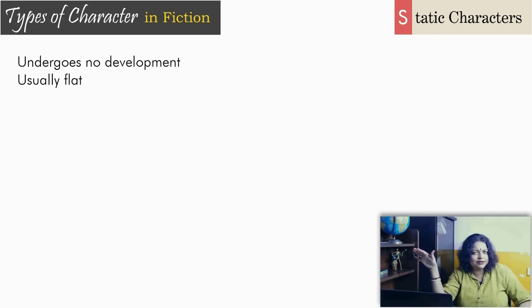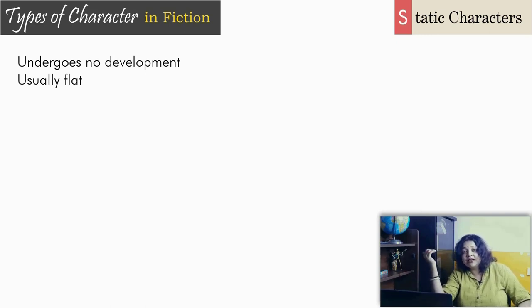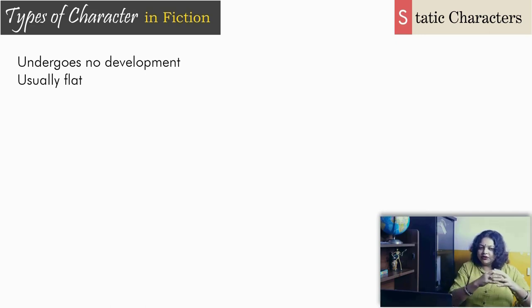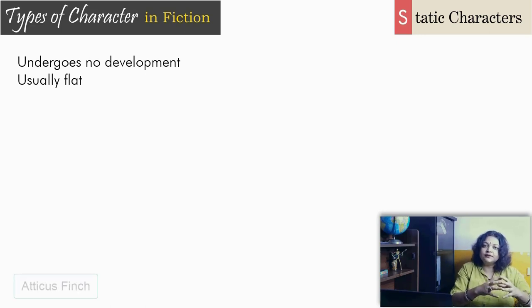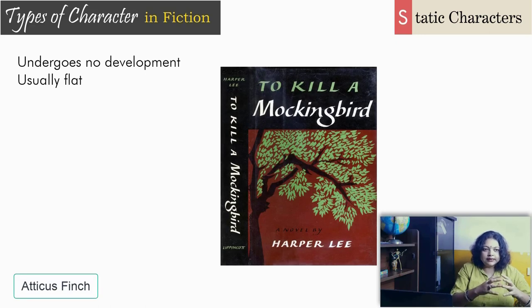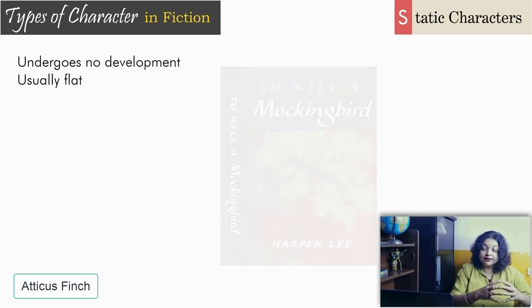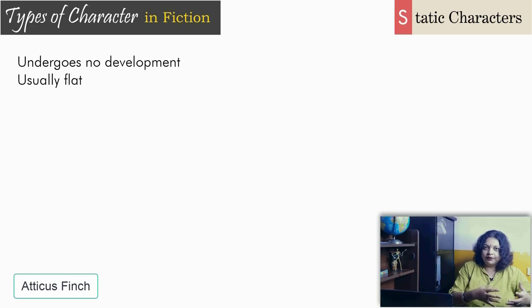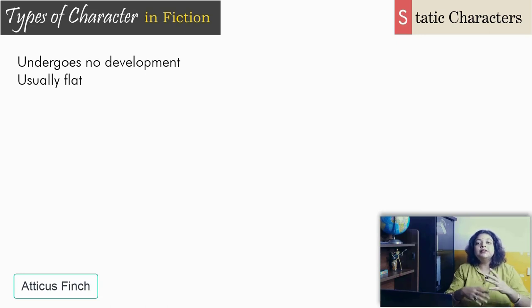In some cases even a round character can remain static — meaning the character is very complicated but remains complicated in the same way. For example, Atticus Finch in To Kill a Mockingbird has a certain perspective on race, equality, and humanity, and he continues to hold the same perspective throughout. Round characters with a set attitude to life who do not change over time give us examples of static round characters.